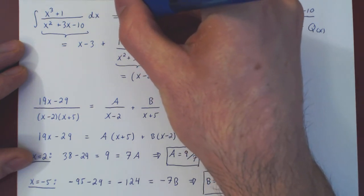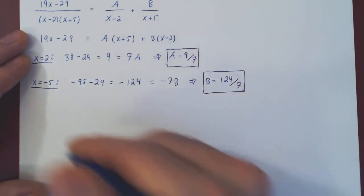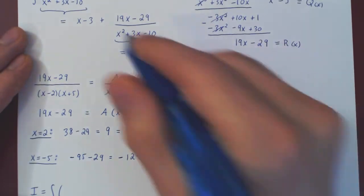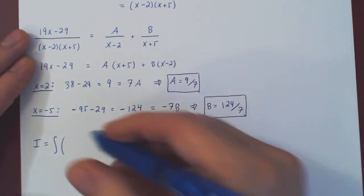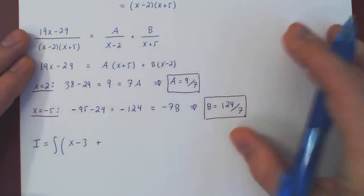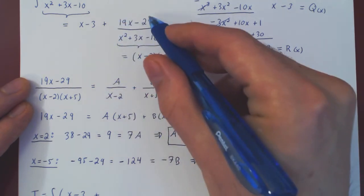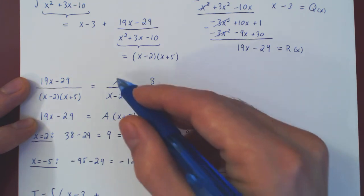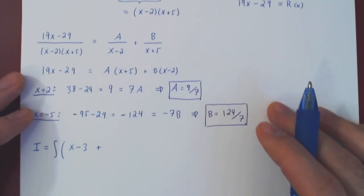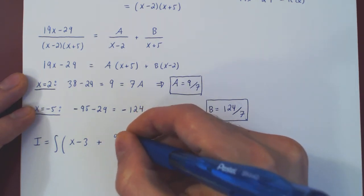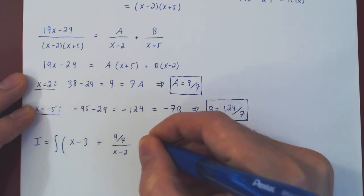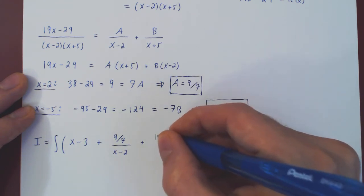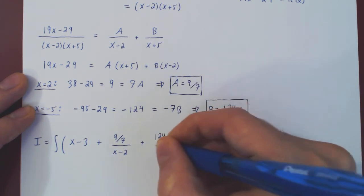So let me just rewrite this and call it I. So in the end, the integral I will be the integral of the quotient x minus 3, plus this rational function, which now as a sum of two partial fractions will be 9 over 7 over x minus 2, plus 124 over 7 over x plus 5.